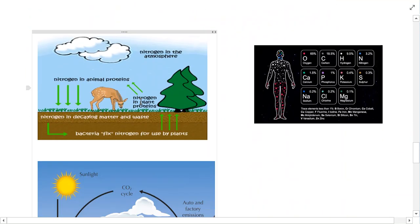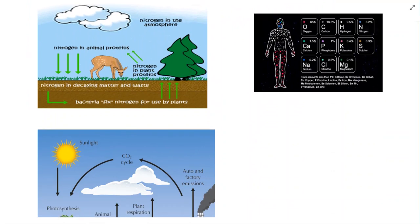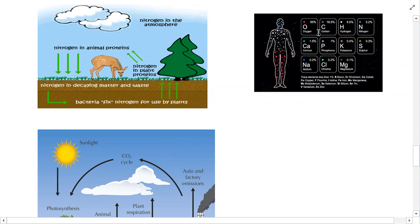Life on earth is dependent on carbon and nitrogen being recycled. Carbon and nitrogen are just elements on the periodic table. We are made up of atoms, and carbon and nitrogen are two fundamental atoms we use to build up our bodies - the same with other animals and plants. Carbon and nitrogen really form the basis, one of the major building blocks in relation to life on the planet.